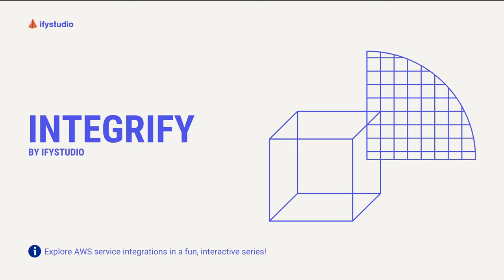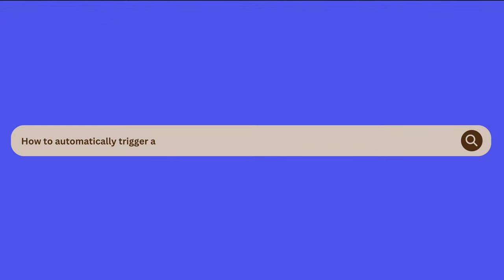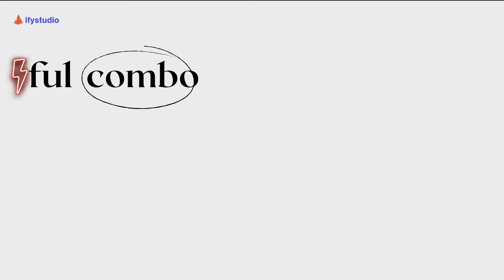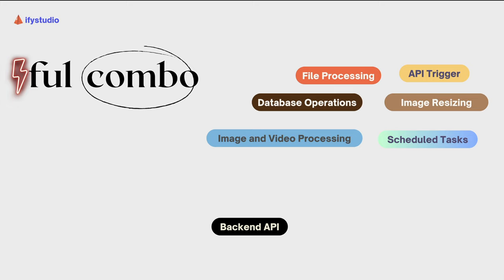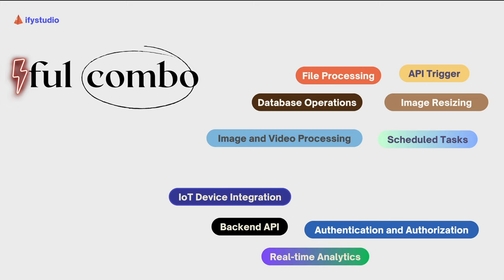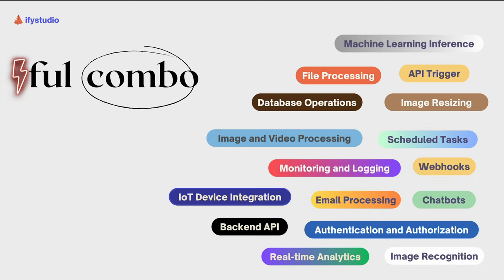Hey everyone and welcome back to this new series called Integrify by i5 Studio. Today we are going to dive into the exciting world of serverless computing with AWS. We will be exploring how to automatically trigger a Lambda function whenever a new file is uploaded to an S3 bucket. This is a powerful combination that can automate tons of tasks — from image resizing to API triggers, video processing, file processing, scheduled tasks, database operations, authentication, IoT, real-time analytics, machine learning inference, chatbots, and image recognition.